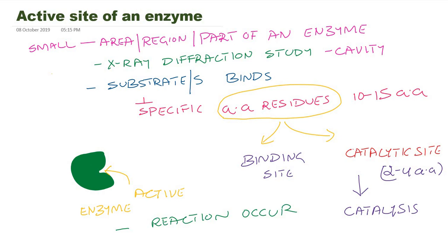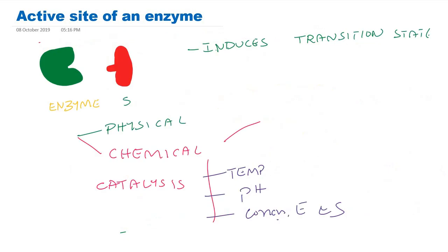The active site has got two types of amino acid residues: one where the substrate binds, called the binding site, which binds and orients the substrate or substrates; and the catalytic site, which catalyzes the reaction by decreasing activation energy. The binding of substrate to the enzyme is a non-covalent bond — like a hydrogen bond, electrostatic bond, ionic bond, van der Waals forces, or sometimes hydrophobic interaction. Co-factors also help in binding of substrate to the binding residues of the active site.